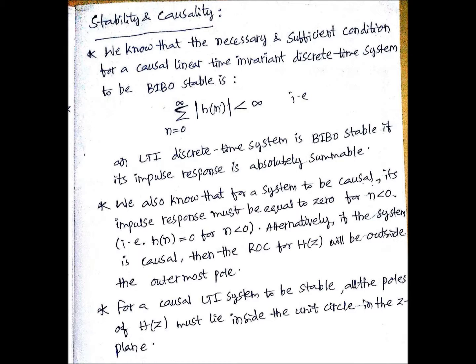For a causal system, alternatively, if the system is causal then the ROC for h(z) will be outside the outermost pole.